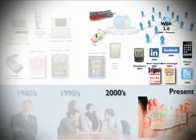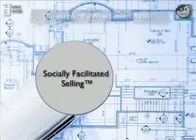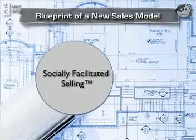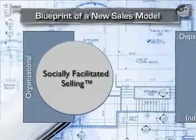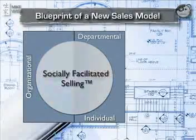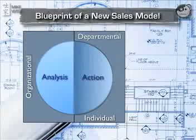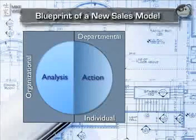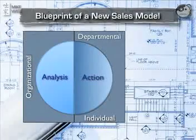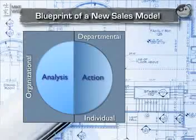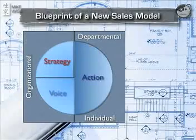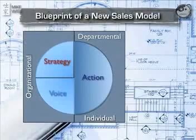With the history of selling in mind, it's a little easier to see the blueprint of the new sales model. Socially facilitated selling impacts three primary points within an organization: it touches the organization, it touches the sales department, and it touches the individual. At the organizational level, the first thing they have to do is an analysis of what's happening inside their market — with their competition, their own products, and their own organization. They need to develop their sales strategy and then develop their voice, the voice of the organization, because all of these things are starting to work together.